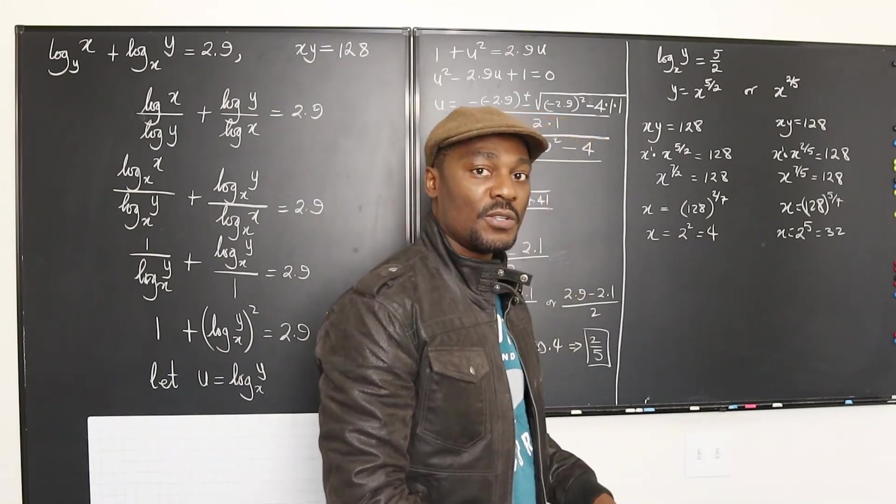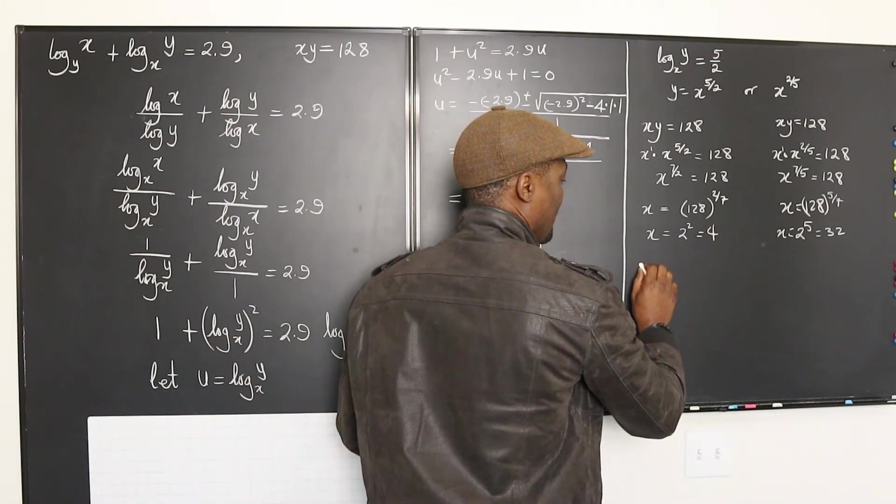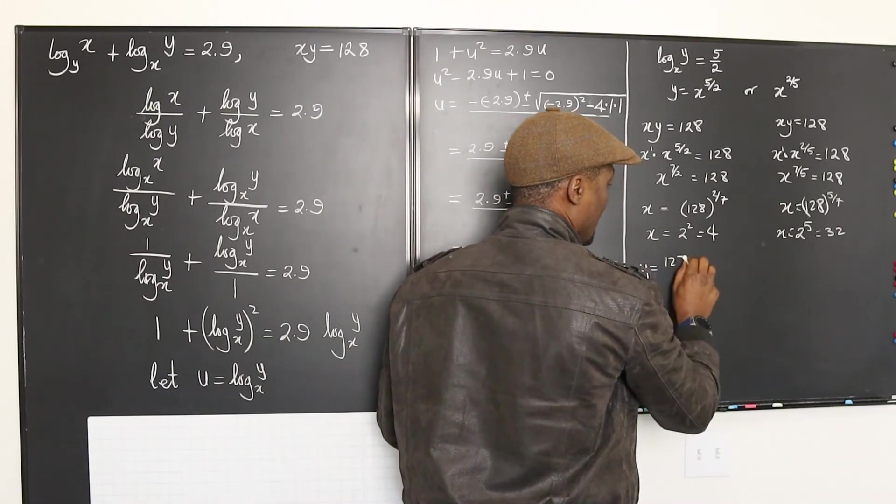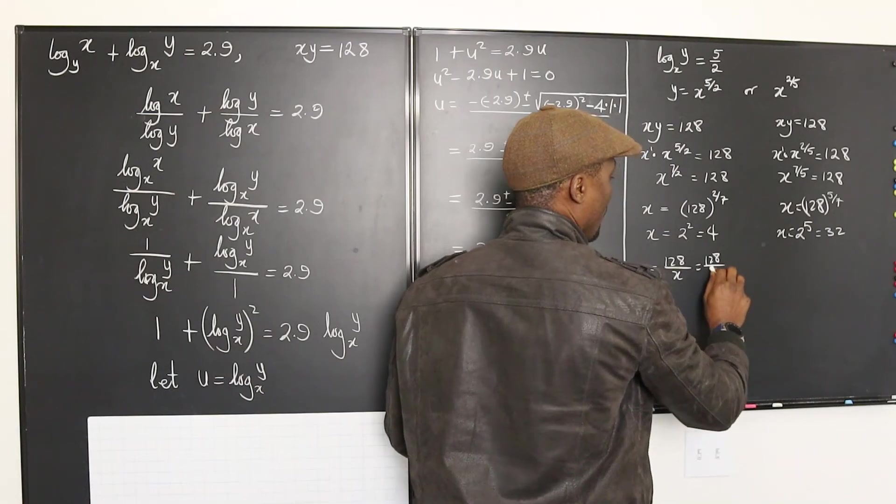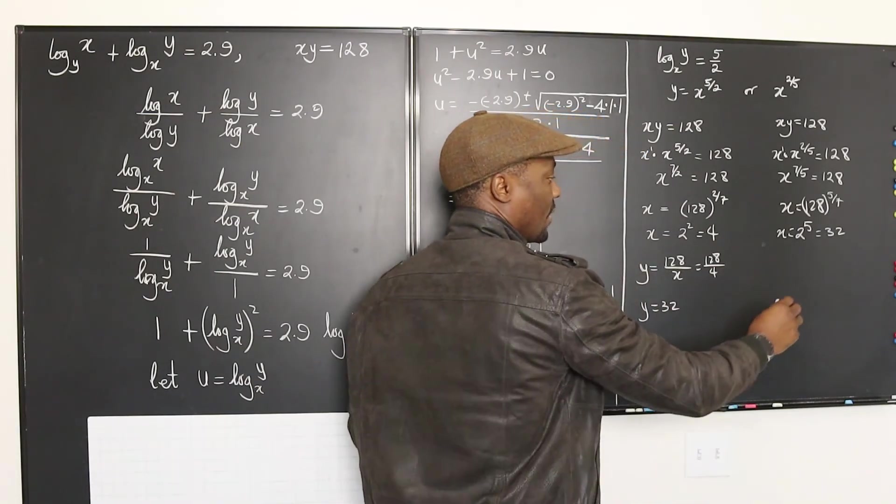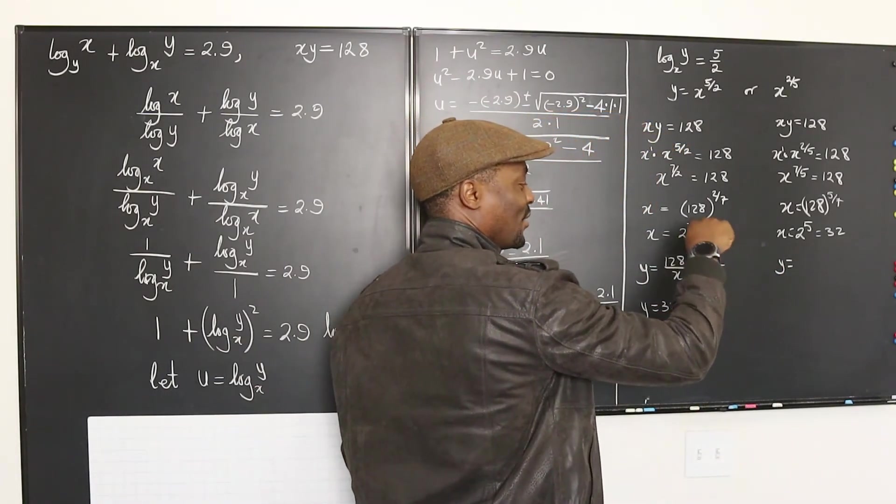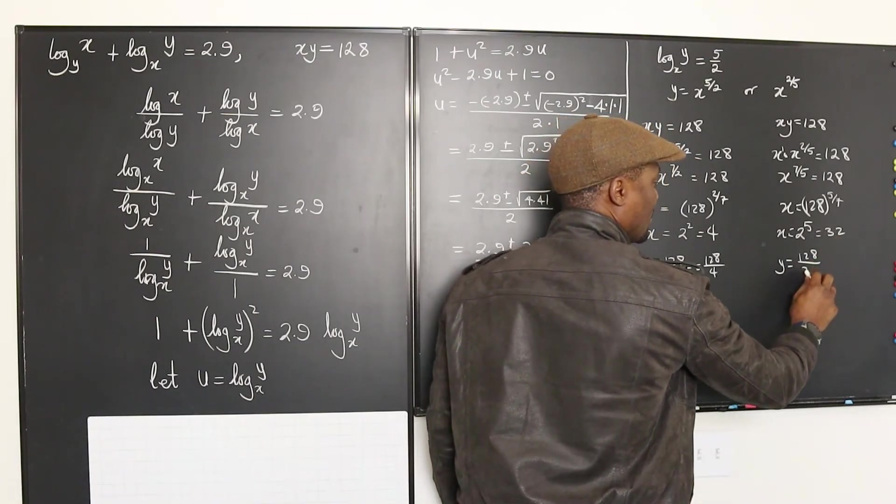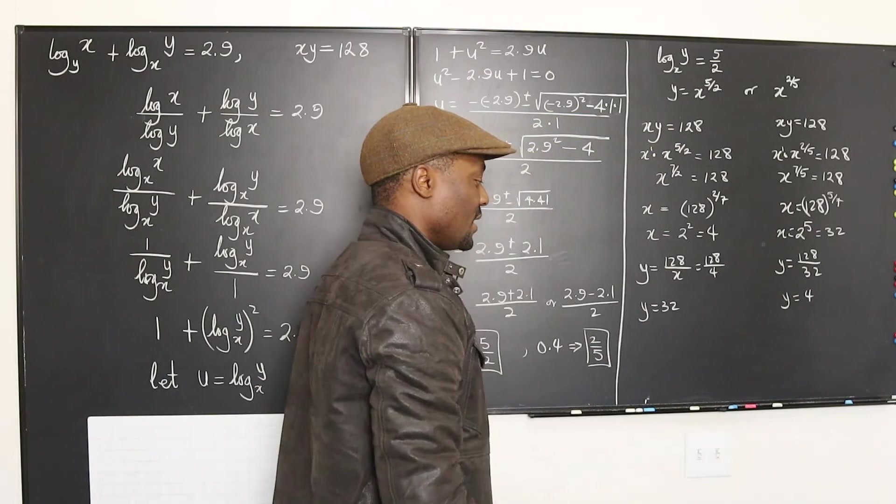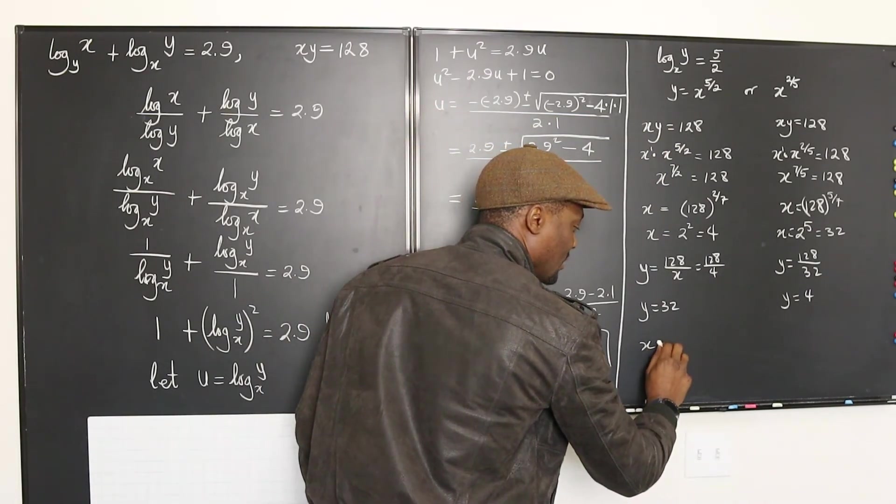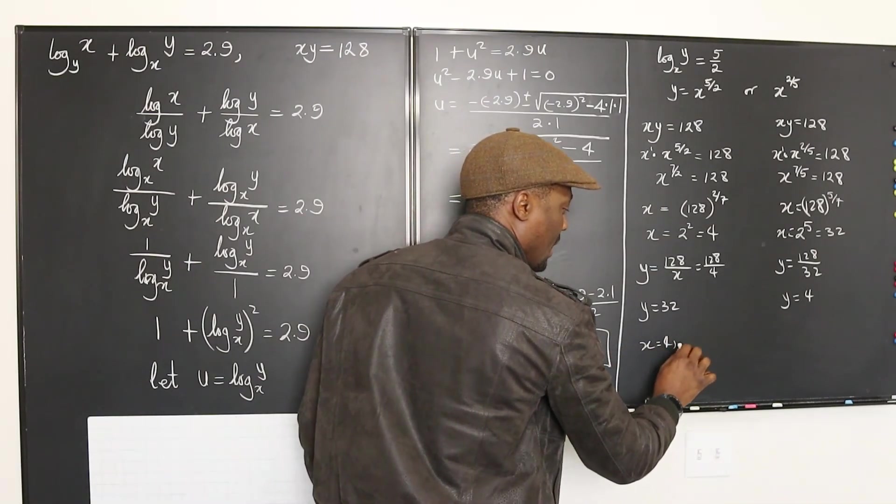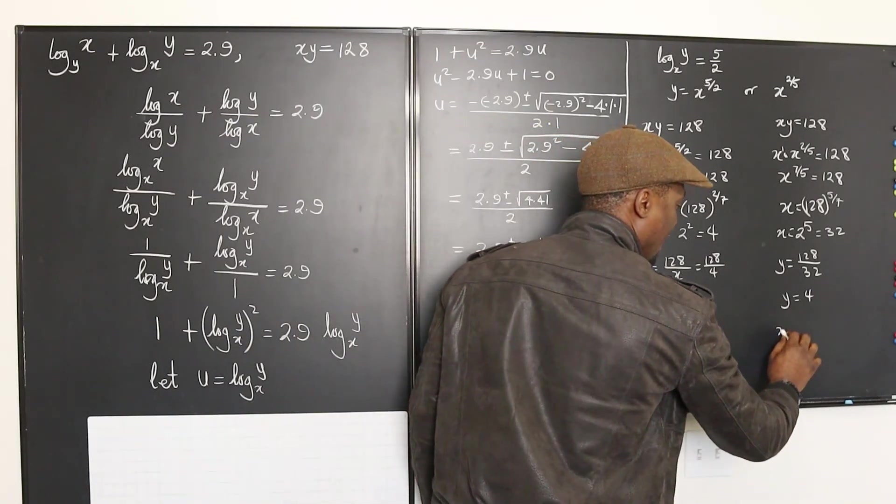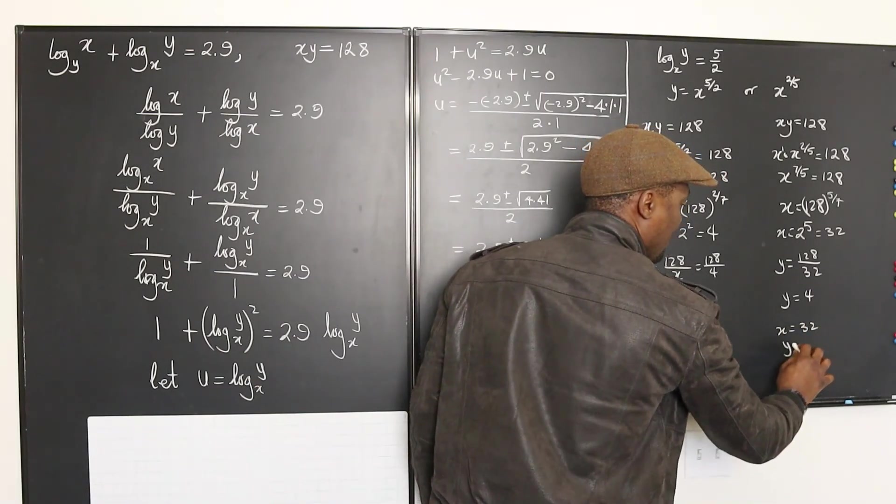We can just find what y will be. So, we have y equals 128 divided by x. 128 over x, which would be 128 over 4. And that gives you y equals 32. On this side, y will be equal to, or it looks like the value switch. y will be equal to 128 over, in this case, 32, which means y equals 4. So, as you can see, on this side, it's either you have x is 4 and y is 32. That's one option. Or you have x is 32 and y is 4.